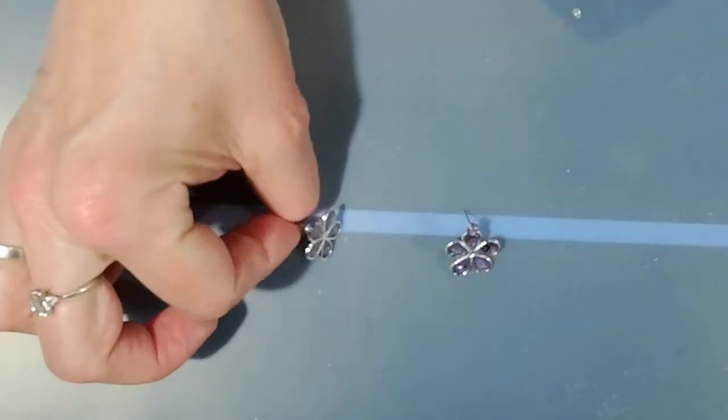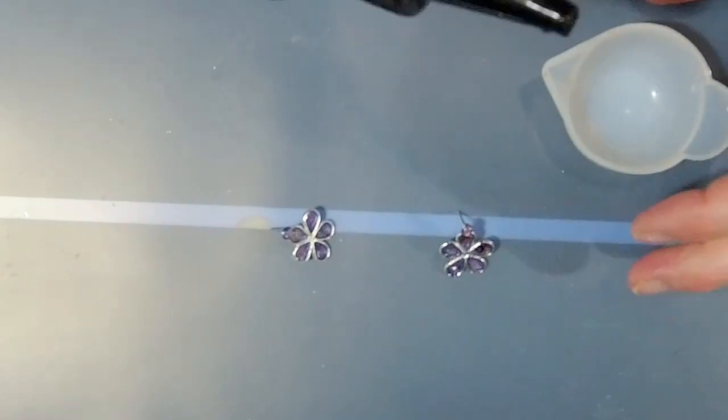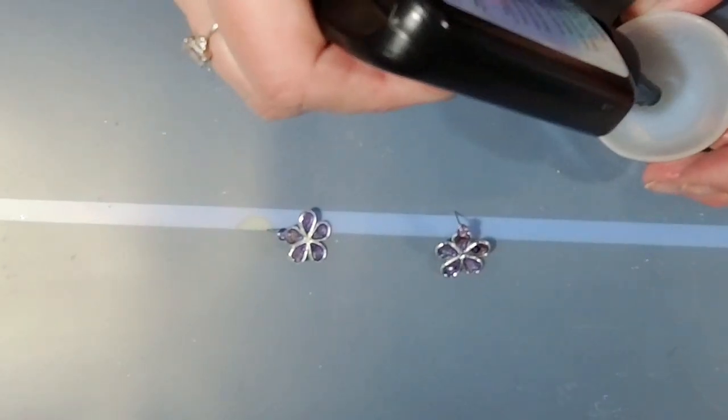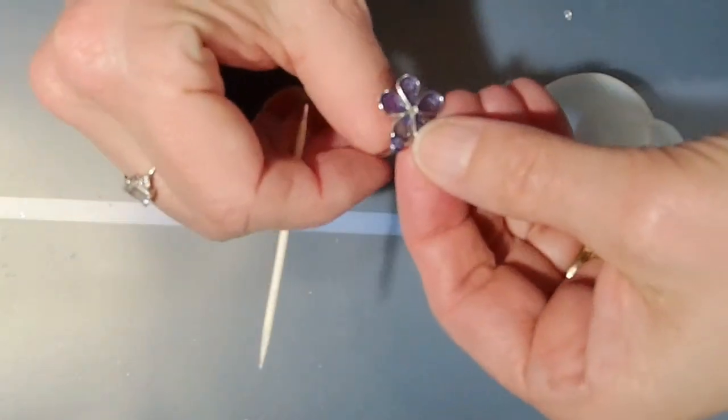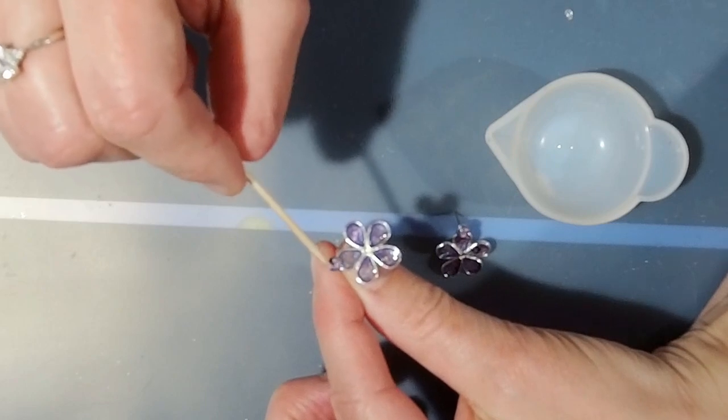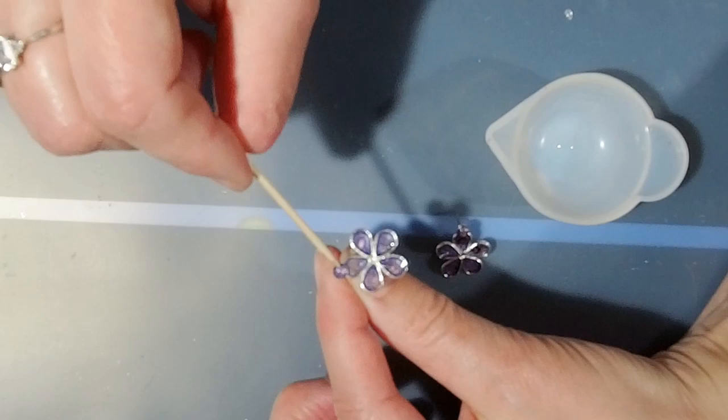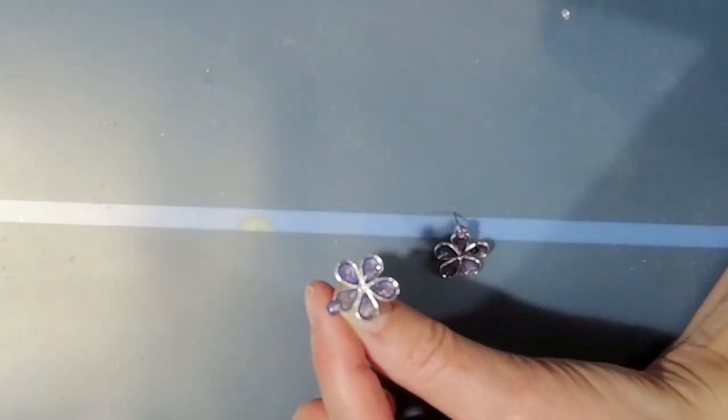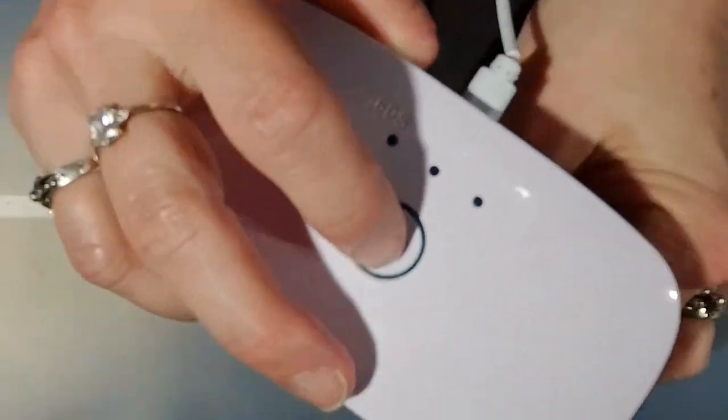So it's now set. I'm going to get clear resin, just a little bit. Best way is to hold it and try and get a little dome on it. How cute is that? And then I'm going to hit it again under the UV light. This time I'm going to hit it for 150 seconds.